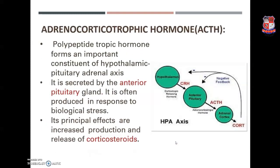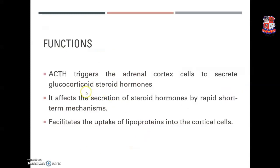Adrenocorticotropic hormone (ACTH) is a polypeptide hormone secreted by the chromophobe cells of the pituitary gland. As the name suggests, it controls the secretions of the adrenal cortex. Its secretion is controlled by the ACTH releasing factor. Secreted by the anterior pituitary gland, its principal effects are increased production and release of corticosteroids. It triggers adrenal cortex cells to secrete glucocorticoid steroid hormones, affects steroid hormone secretion via rapid short-term mechanisms, and facilitates uptake of lipoproteins into cortical cells.